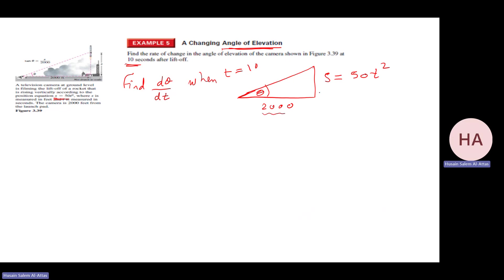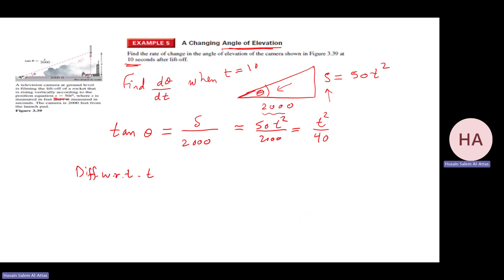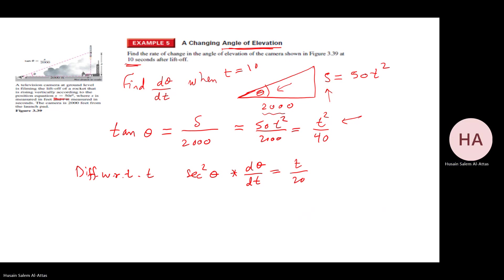I want to relate this number, which I know, with s and the angle. Looking at the angle, I want the opposite over the adjacent — so I need tan θ, which equals s/2000. But s = 50t², so tan θ = 50t²/2000, which gives me t²/40. Now if we differentiate with respect to t: secant²θ · dθ/dt = t/20.